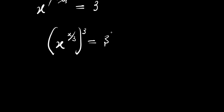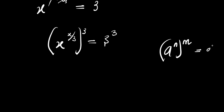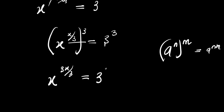To solve for x, I raise both sides to the power of 3. Using the identity: a power n raised to the power of m equals a power n times m. I multiply the exponents and have x power 3 times x over 3, raised to x over 3, equals 3 power 3. The 3s cancel, so I have x power x equals 3 power 3.